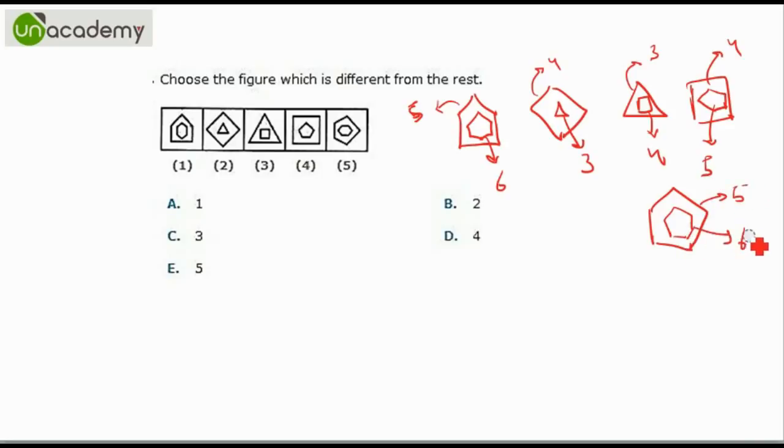So we see that the inside figure has one more side than the outside figure in all of these except for option 3. So that is the different one, and that is how we spot it.